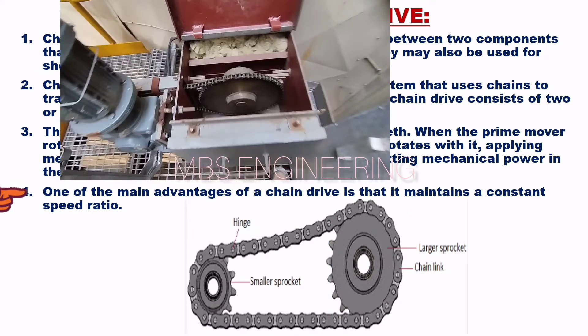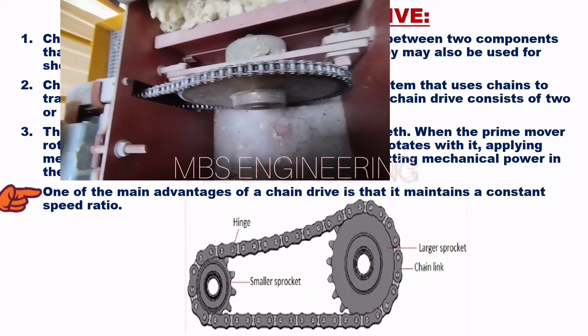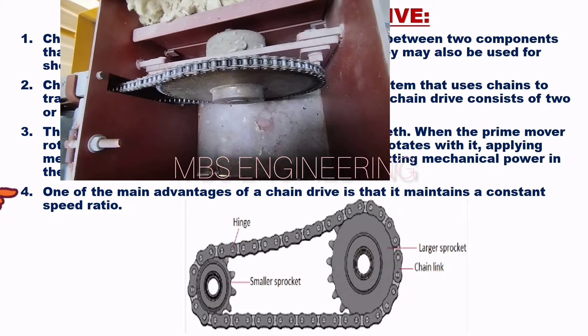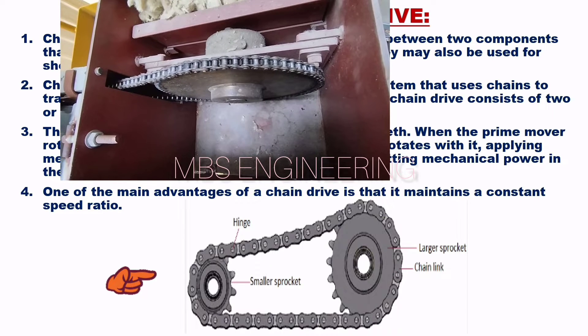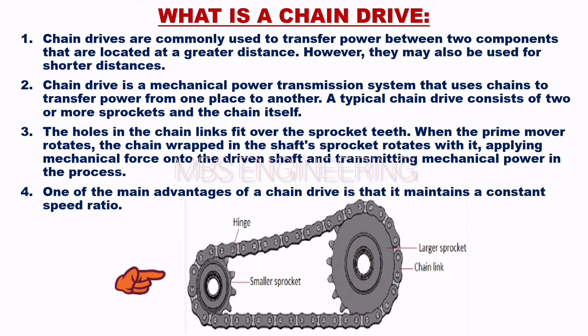The fourth point is that one of the main advantages of a chain drive is that it maintains a constant speed ratio. Please refer to the construction of the chain drive for better understanding.